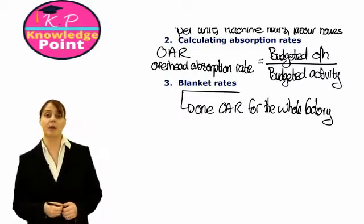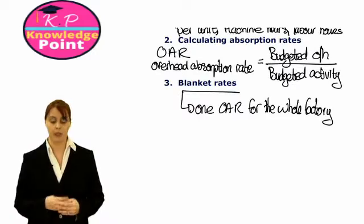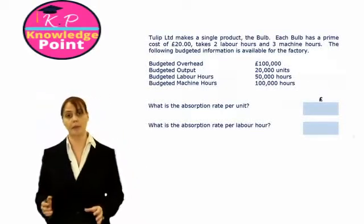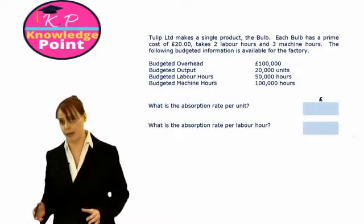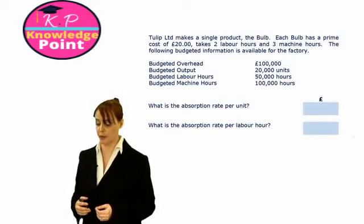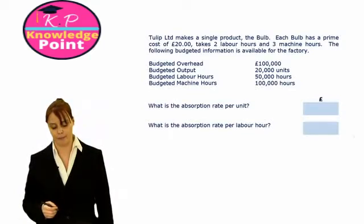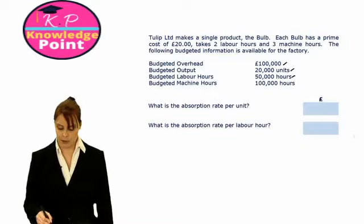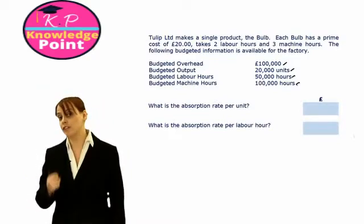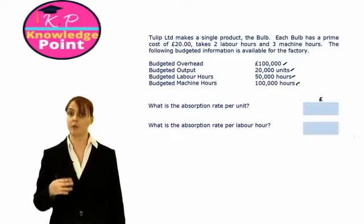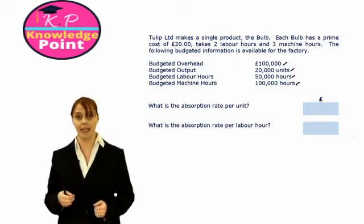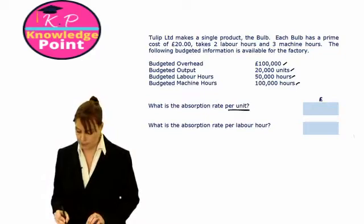A blanket rate will usually apply where we only have one production cost centre for the whole factory. Let's look at an example. We are told that Tulip Limited makes a single product — the bulb — where each bulb has a prime cost of £20. It takes two labour hours and three machine hours to make each unit. We also have some additional budgeted information: our budgeted overhead costs, as well as activity levels for total output, labour hours, and machine hours. We are going to calculate what our overhead absorption rate will be depending on which method we choose, starting with a per unit basis.